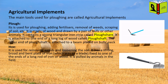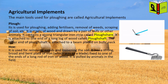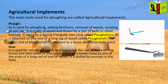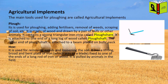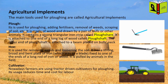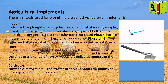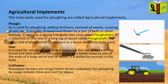Hoe. It is used for removing weeds and loosening the soil. It has a strong, broad, and bent plate of iron fixed to one end of a long rod of iron or wood. It is pulled by animals in the field. Cultivator. Nowadays, farmers are using tractor-driven cultivators for plowing. Its usage reduces time and cost for labor.